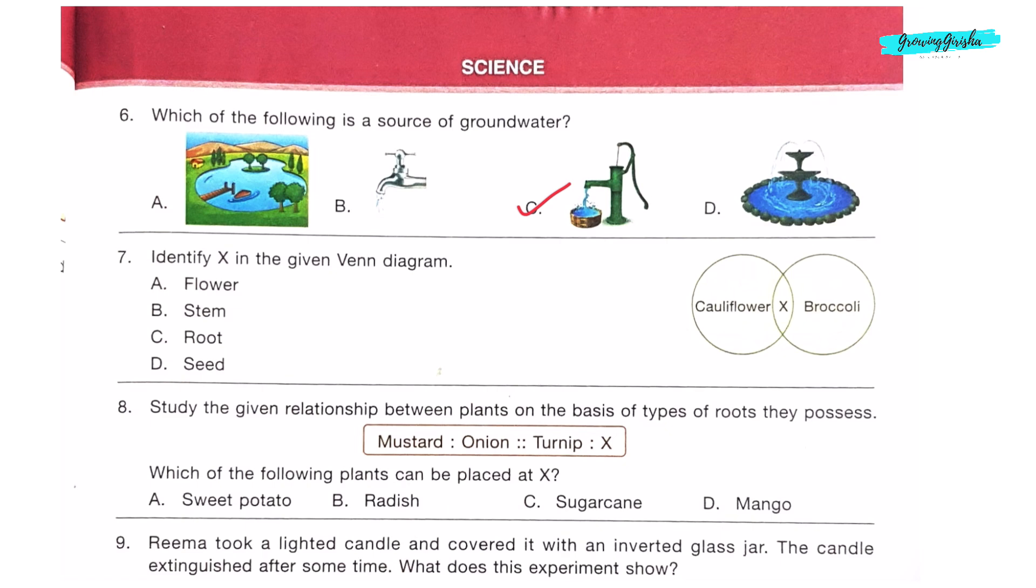Question 8: Study the given relationship between plants on the basis of types of roots they possess. Mustard is to onion, Turnip is to X. In the first relationship, mustard has tap root, onion has fibrous roots. Similarly, turnip has tap root, and X will be something that has fibrous roots. Sugar cane in option C has fibrous roots. So X is sugar cane, option C.